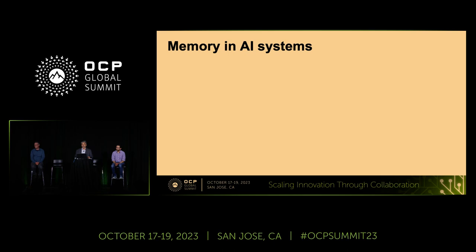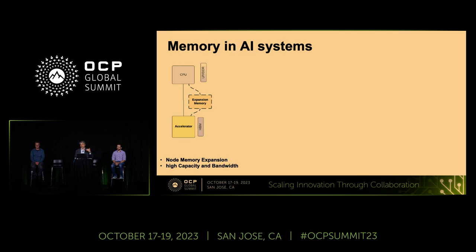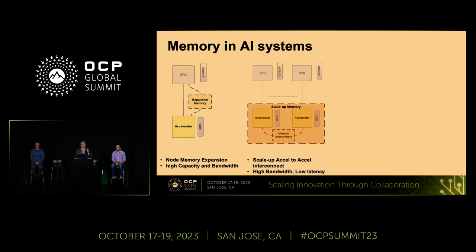Focusing on memory and AI systems: we're hitting the limit of how much memory accelerators have. HBM provides high memory bandwidth but the capacity is limited. At some point, we need technology solutions for a tier-two memory for accelerators — expanding capacity attached to the GPU or accelerator, which may be shared with the CPU as workloads evolve between CPU and GPU. We call this node memory expansion, where we need high capacity and high bandwidth.